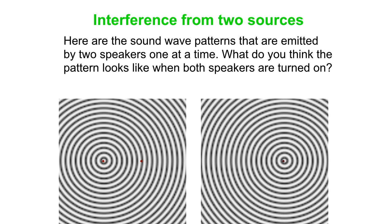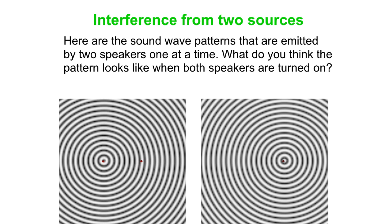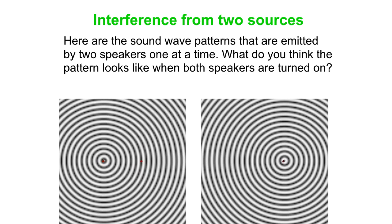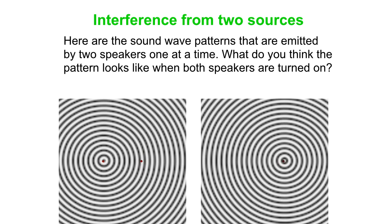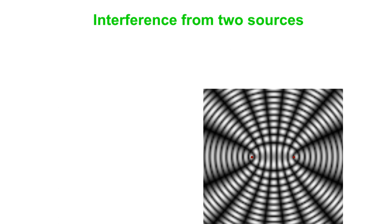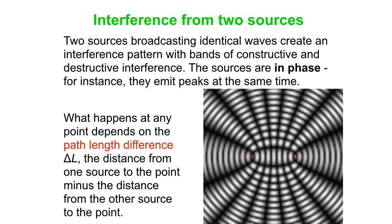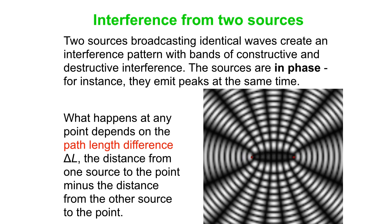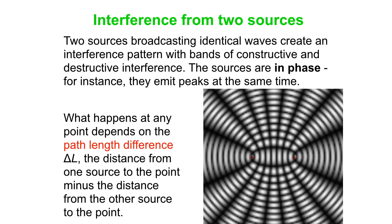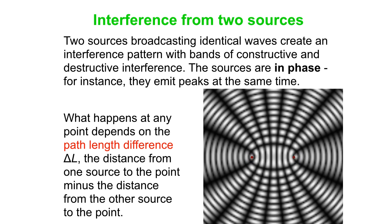Let's consider two speakers sending out waves. If we turn only the left one on, we get this pattern on the left. If we turn only the right one on, we get the pattern on the right. So you think: what would we get if we put both speakers on at the same time? And you get this really complex pattern with dark lines and interesting waves moving out from the center.